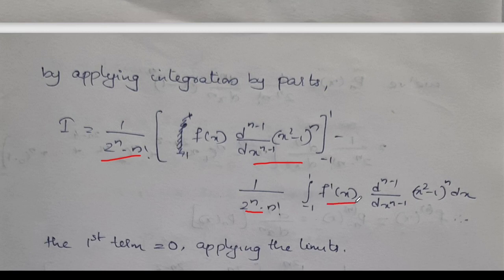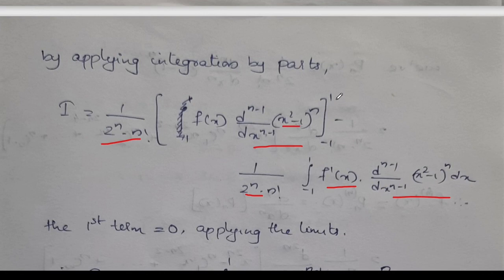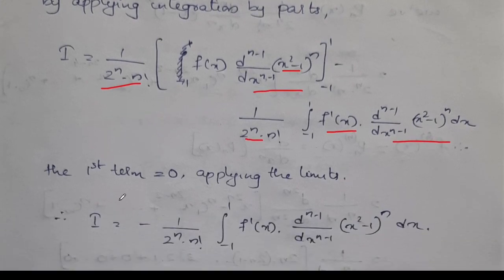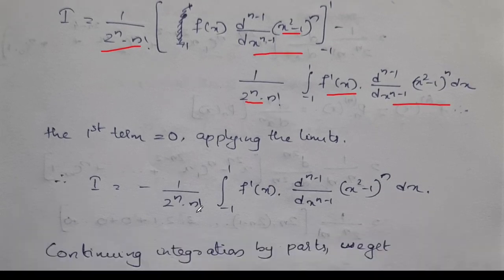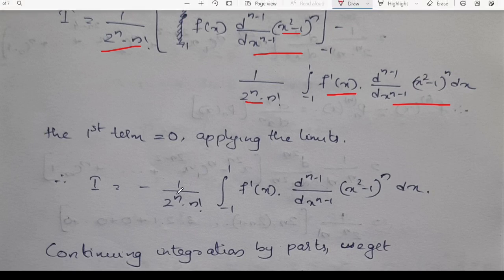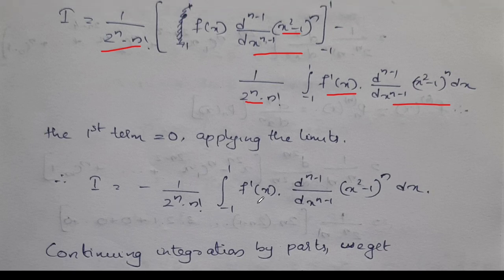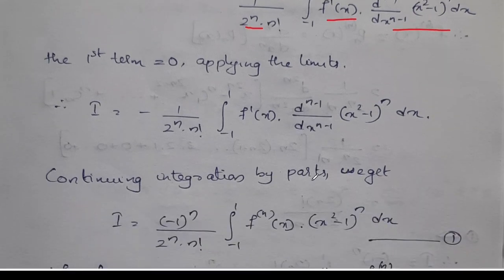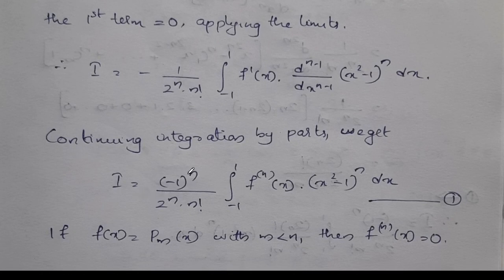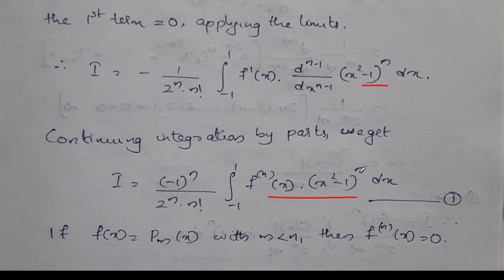So the derivative of the first term f prime of x, again the integral of d raised to n minus 1 by dx raised to n minus 1 into x squared minus 1 all raised to n dx. So the derivative of the integral of d raised to n minus 1 by dx raised to n minus 1 into x squared minus 1 all raised to n dx.